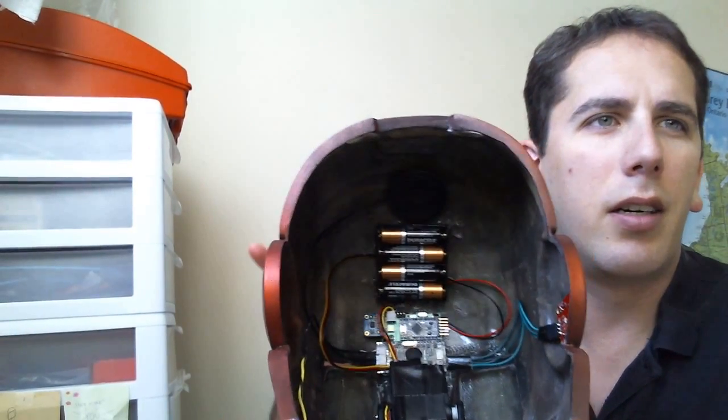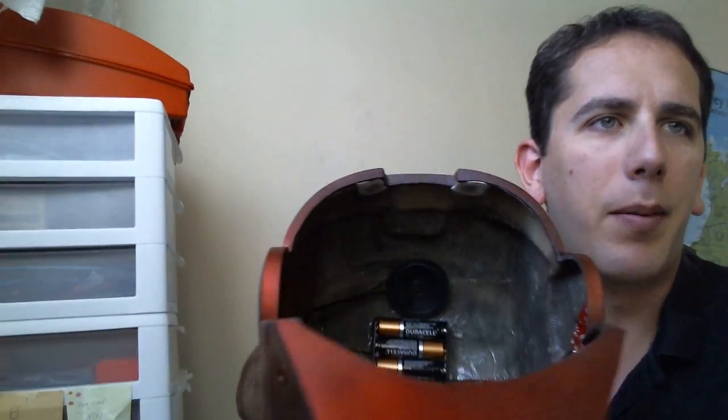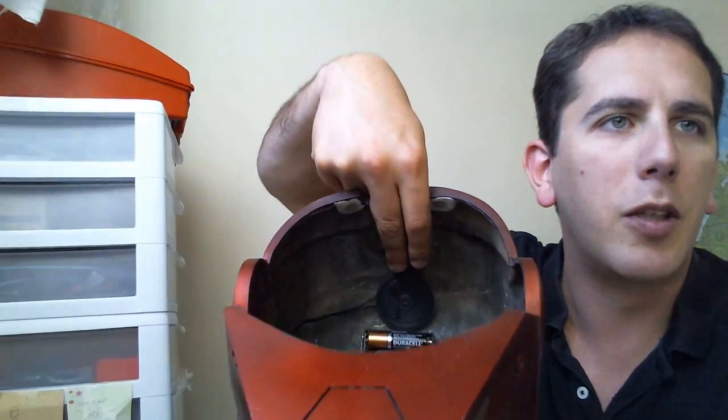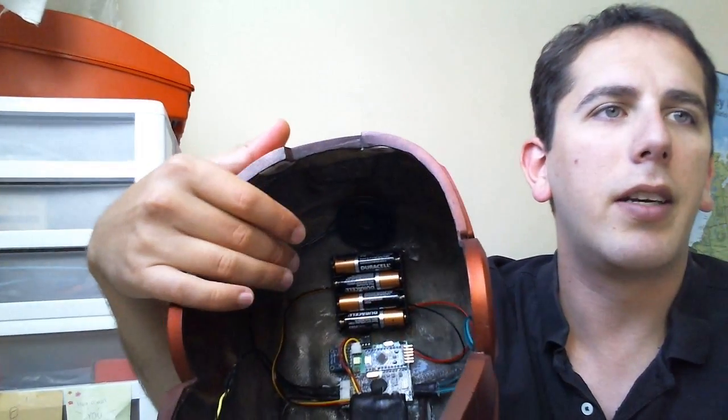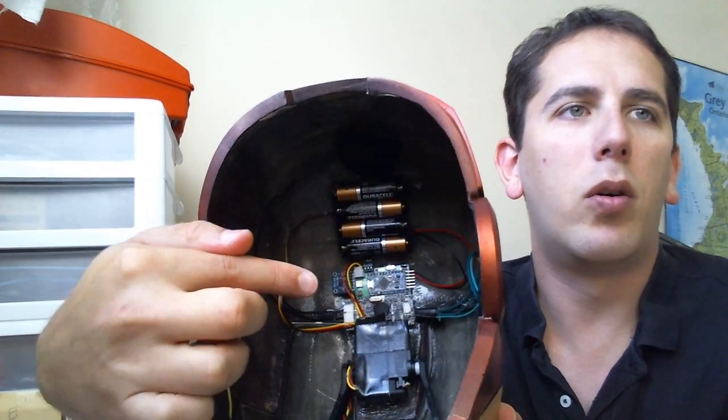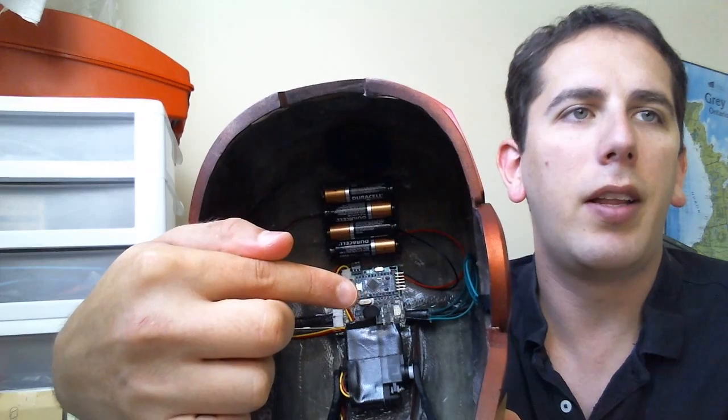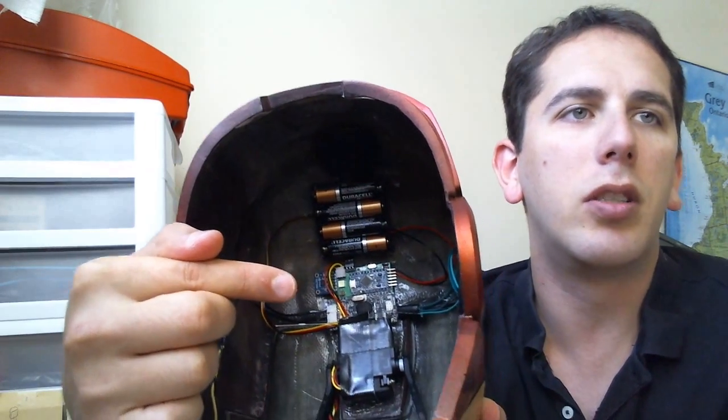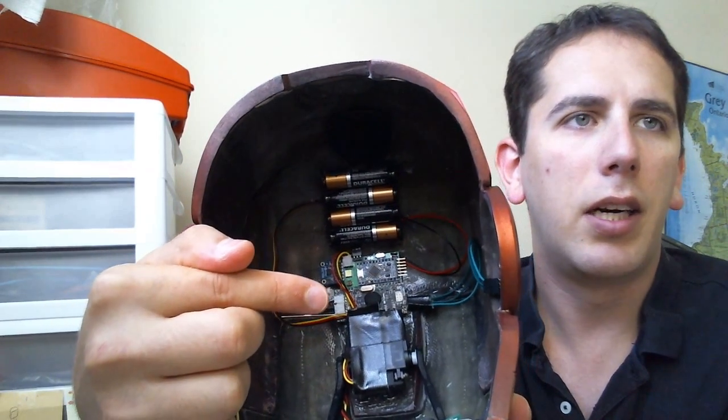So to begin, at the very top, you can see this round circle here. That's my speaker. Then we've got the batteries here. This is the whole control board. Very thin, about two square inches in area.